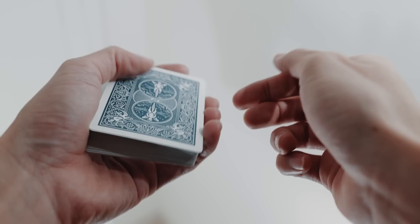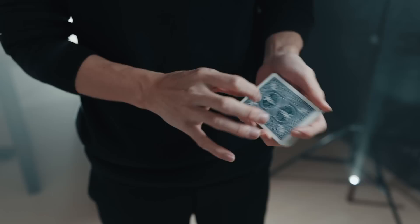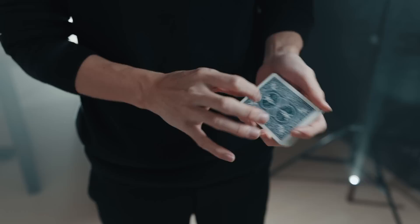This is a knacky move and again will require some practice, so just keep doing it over and over again until it looks smooth. It should just look like you're flipping over the top card when in reality you've secretly placed an extra card on top and the ace is actually second from the top.